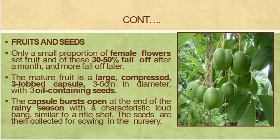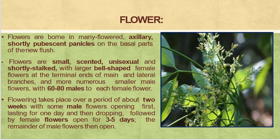Regarding the morphology of rubber, flowers are born in many-flowered axillary panicles on the basal part of the new flush. Both female and male flowers are present on the same plant. It is a unisexual plant with small flowers. Shortly stalked, longer bell-shaped female flowers occur at the terminal position, while male flowers are present at lateral portions. Flowering takes place over about two weeks, with male flowers opening first, lasting one day and dropping, followed by female flowers opening for three to five days.